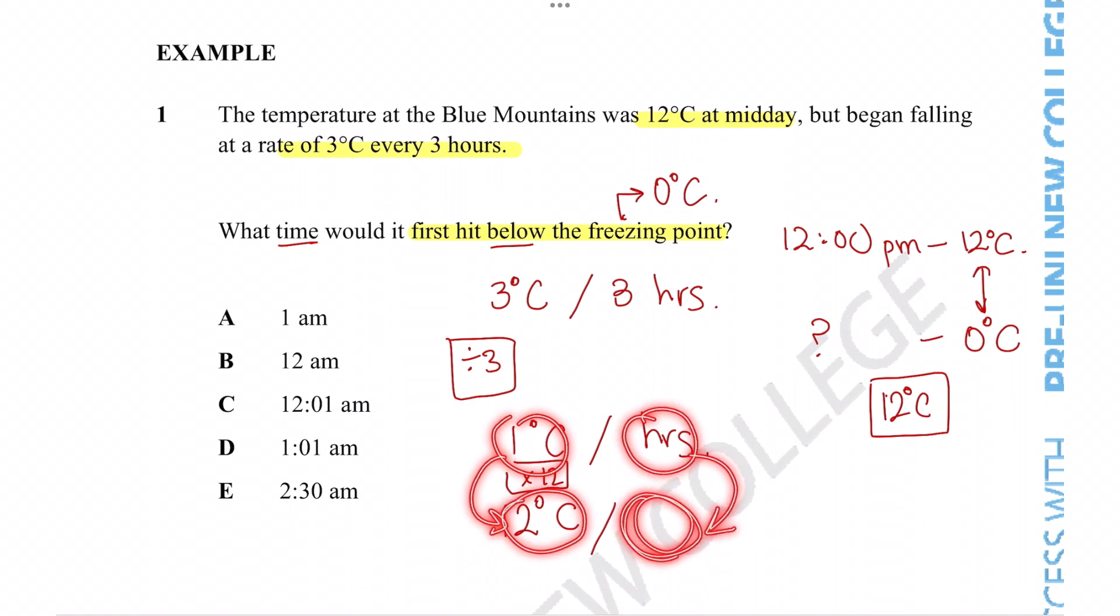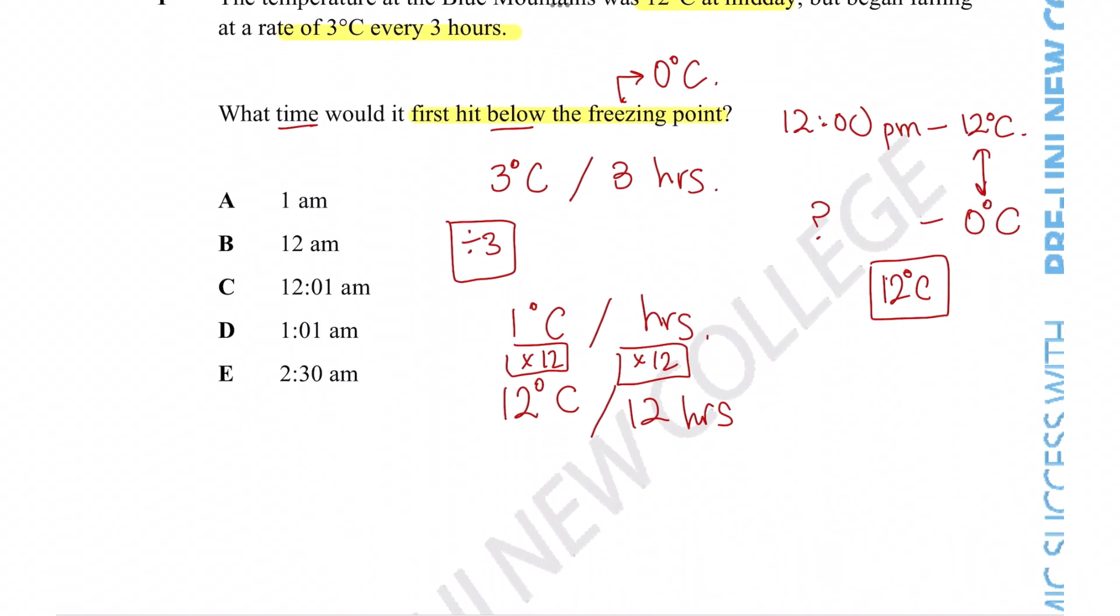That means it takes us 12 hours for the water temperature to change by 12 degrees. So that means exactly 12 hours after 12 pm is equal to midnight or 12 am. This is when the temperature is equal to zero degrees Celsius.